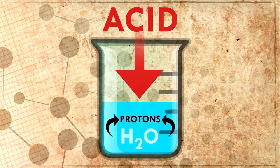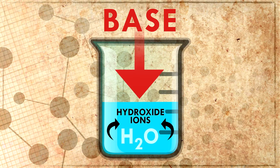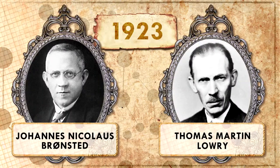Arrhenius' definition of acids and bases works very nicely with the pH scale. When an acid dissolves in water, it adds protons to the solution, increasing their concentration and resulting in an acidic solution. Bases do the opposite, adding hydroxide ions to the solution. Arrhenius' definition is a good one, but it's not the only way to think about acids and bases, nor is it the most useful way to explain every situation.